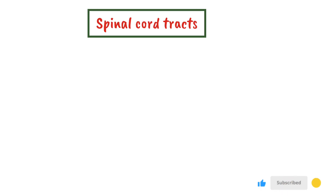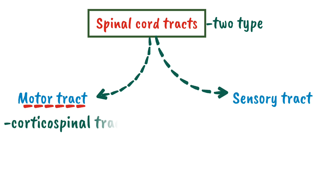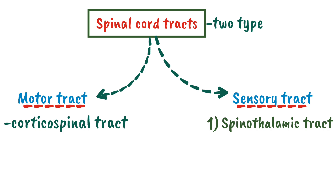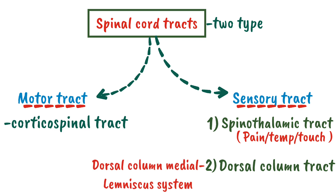The spinal cord tracts are divided into two types. The first one is a motor tract and the second one is a sensory tract. The motor tract includes the corticospinal tract, and the sensory tracts are further divided into two types: the spinothalamic tract, which carries pain, temperature and touch fibers, and the dorsal column tract, also called the dorsal column medial lemniscus system, which carries the sense of vibration, proprioception and fine touch.